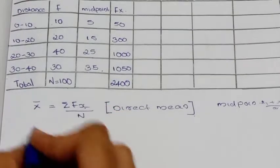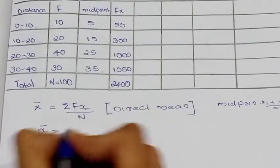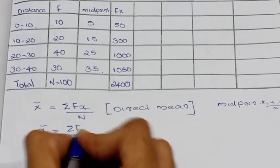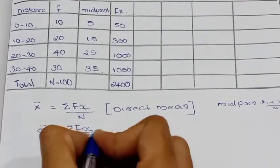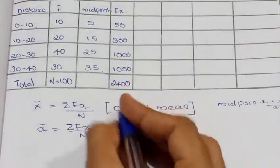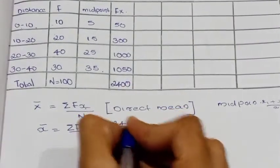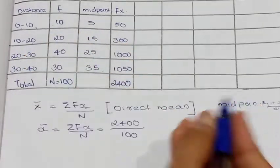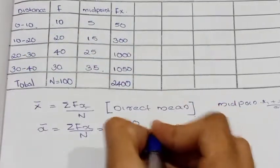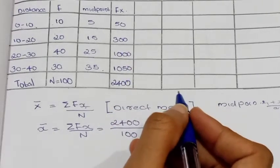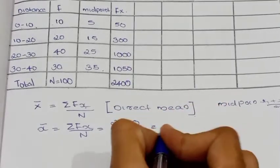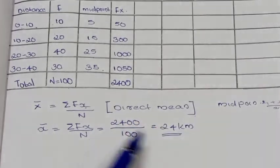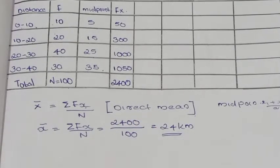x̄ equals sigma fx divided by n. Sigma fx is 2400 divided by n which is 100. So the mean distance covered is 24 km. This completes the Direct Method.